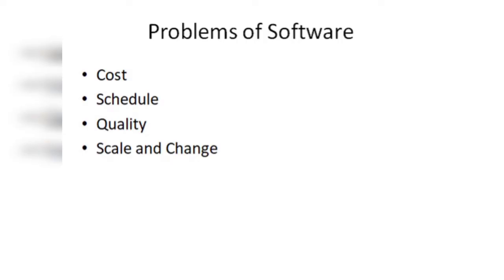Next problem is quality — software बनाना कोई बड़ी बात नहीं है, quality software बनाना is a big task। Quality को maintain करना throughout the procedure is a problem. Next is scale and changes — अगर आप भविष्य में software को larger scale में transform करना चाहते हैं या कोई minute changes करना चाहते हैं, यह भी एक big problem है जिसको encounter करना पड़ता है।